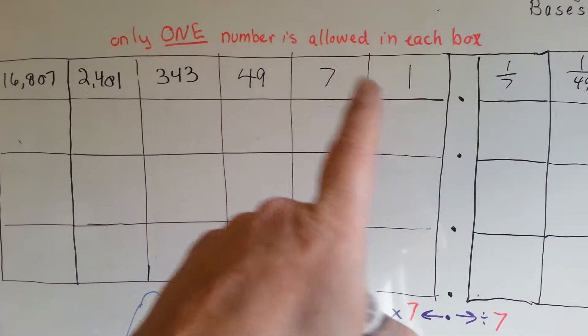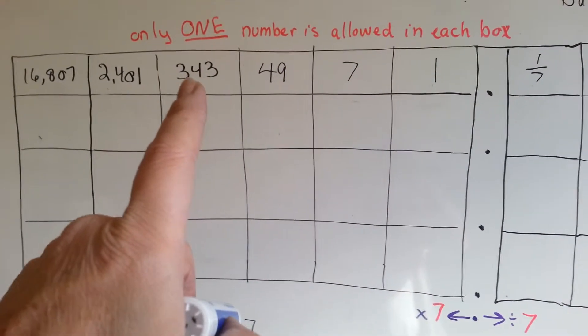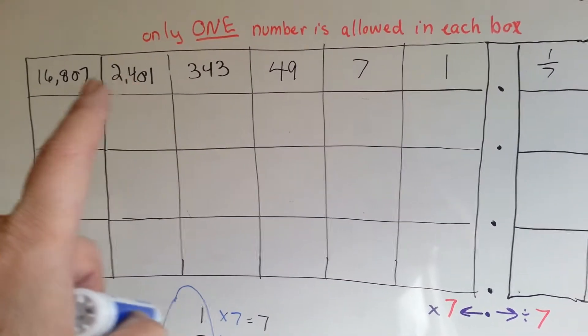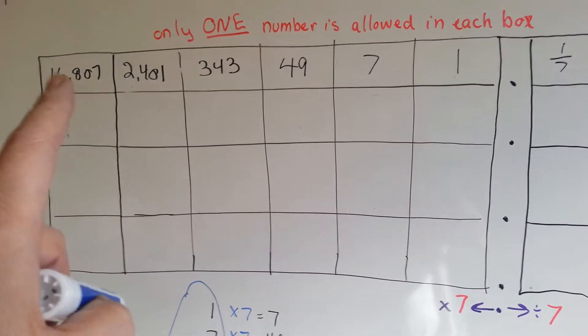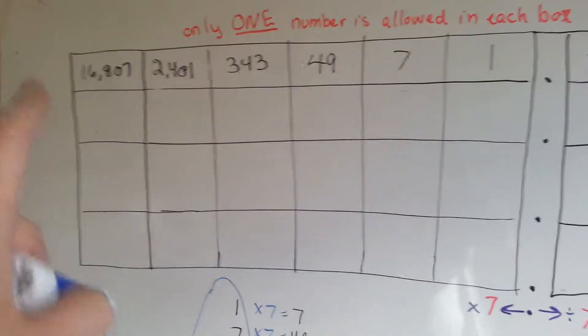Ones, sevens, forty-nines, 343s, 2401s, 16807s. You multiply that by seven and you could have the next column.